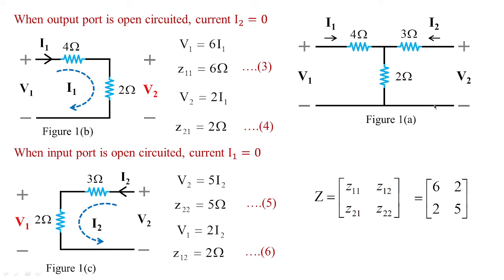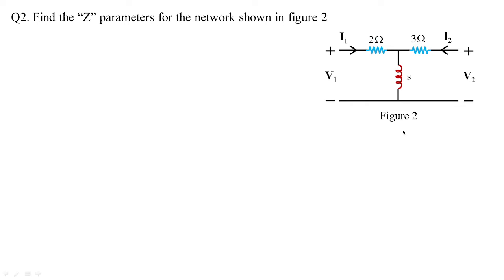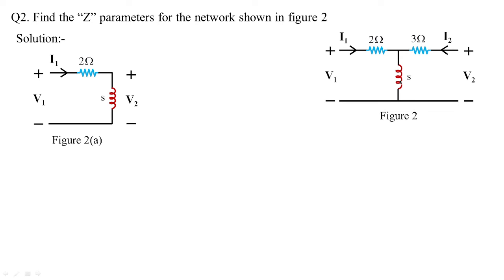Now consider another T network with 2 ohms, 3 ohms, and an inductor represented as s in the Laplace domain. This inductor has a value of 1 henry, represented as 1s (simply s). Applying the same technique — open-circuiting port 2 — the 3 ohms goes off and 2 ohms connects in series with s. This gives v1 = (2 + s)·i1, so z11 = (2 + s) ohms.